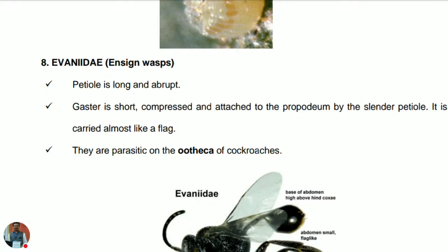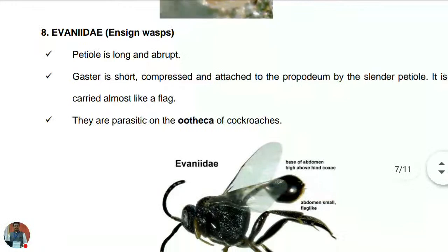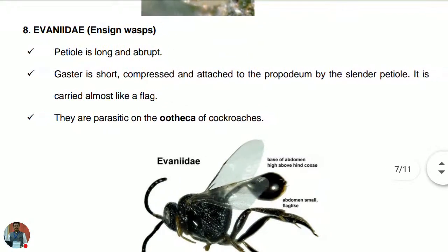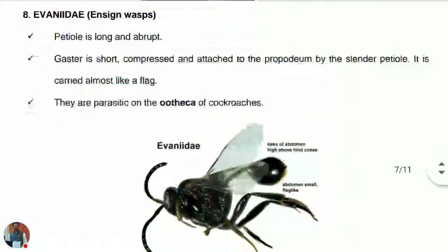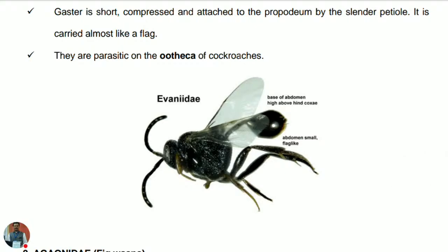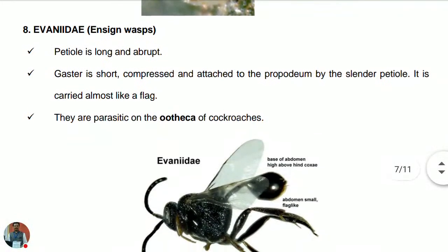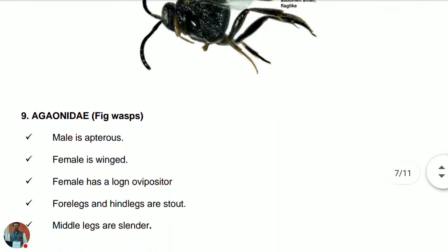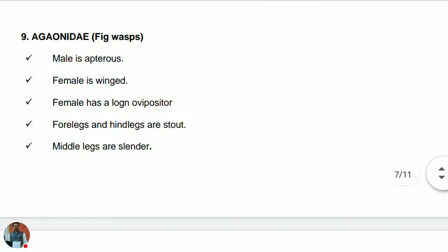Family Evanidae — members are called ensign wasps. The petiole is long and abrupt. The gaster is short, compressed, and attached to the propodeum by the slender petiole, carried almost like a flag. Members of Evanidae are parasitic on the oothecae of cockroaches.